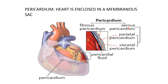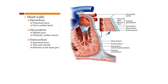Inside the pericardium there are heart walls with three parts: first is epicardium — the outermost layer; second is myocardium — the muscle layer; and third is endocardium — the innermost layer. The heart is formed of four chambers: right atrium, right ventricle, left atrium, and left ventricle. The right atrium and right ventricle are separated by a coronary sulcus, also known as the atrioventricular groove. The right and left ventricles are separated by the interventricular sulcus.